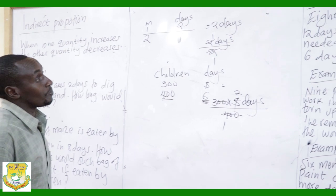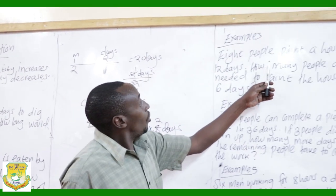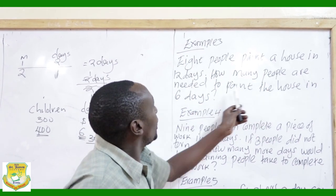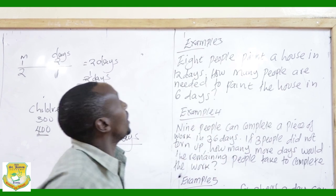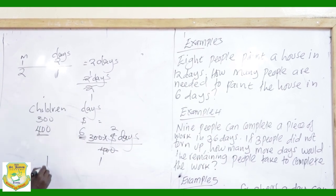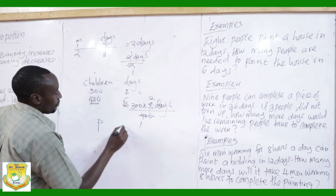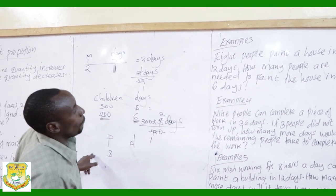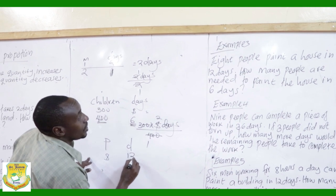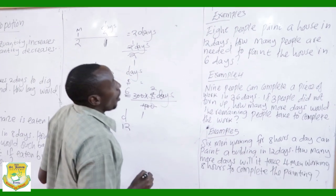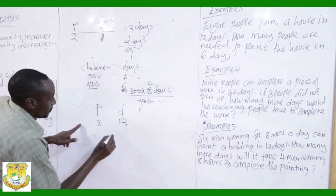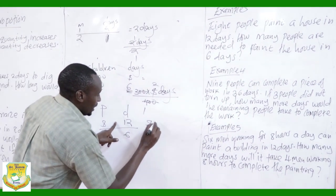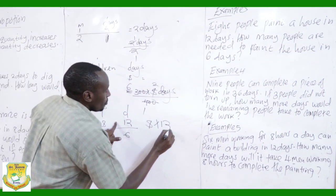Example 3: Eight people paint a house in 12 days. How many people are needed to paint the house in 6 days? We have people on one side and days on the other. Eight people can take 12 days to paint the house. How many people are needed to paint it in 6 days? We give this work to one person first.